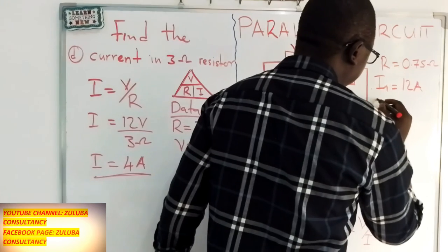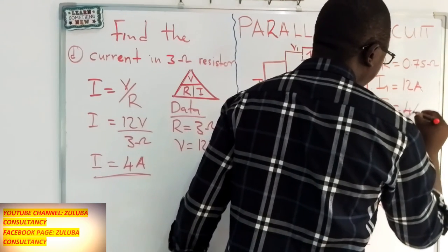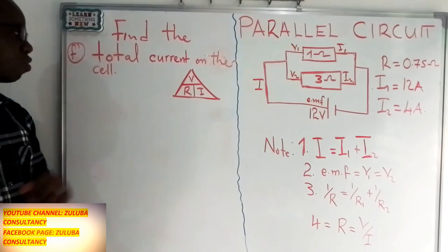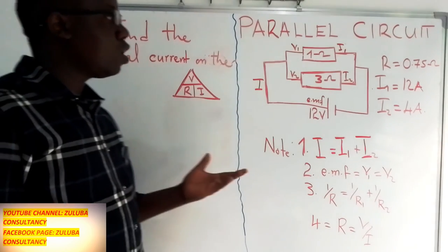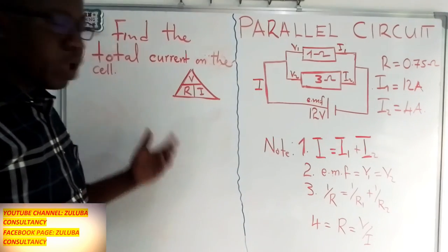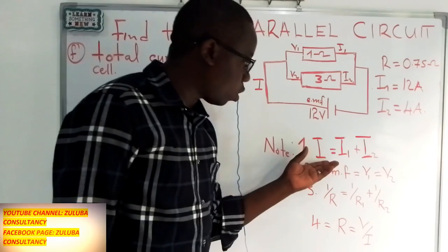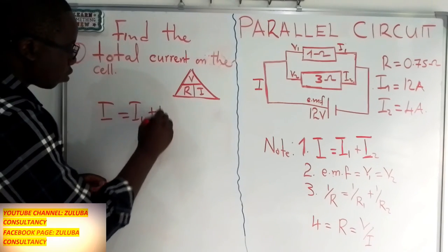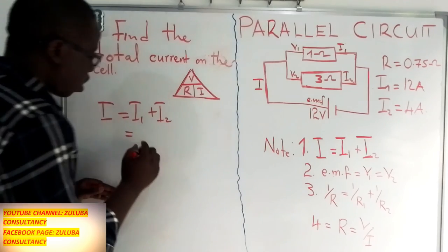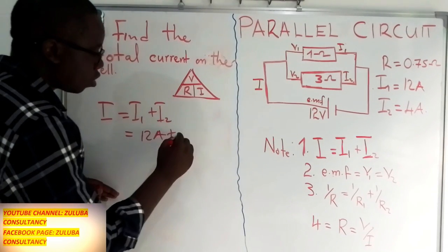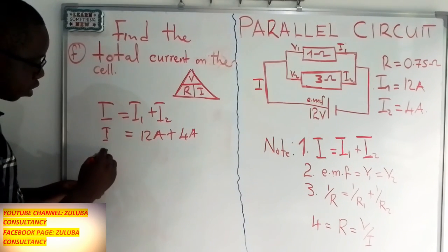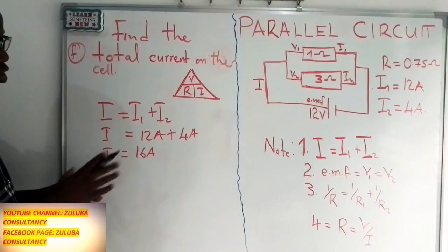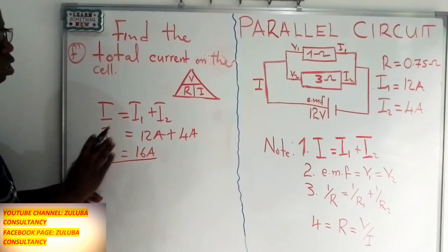So I2 equals 4 amps. Last but not least, we can be asked to find the total current passing through the cell. Using equation 1: total current equals I1 plus I2. We found I1 is 12 amps and I2 is 4 amps, so the total current equals 12 plus 4, which is 16 amps.